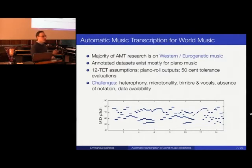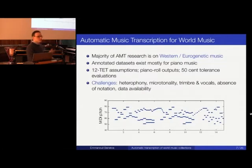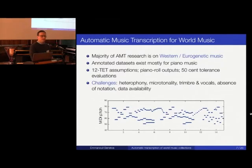There are specific challenges when analyzing world music collections that you don't really find in so-called urogenetic music. For example, heterophony — where many instruments interpret the same melody in different ways or different octaves. Microtonality is another challenge, including the performance of quarter tones, which is fairly common in world music, as well as the presence of different timbres and different instruments.